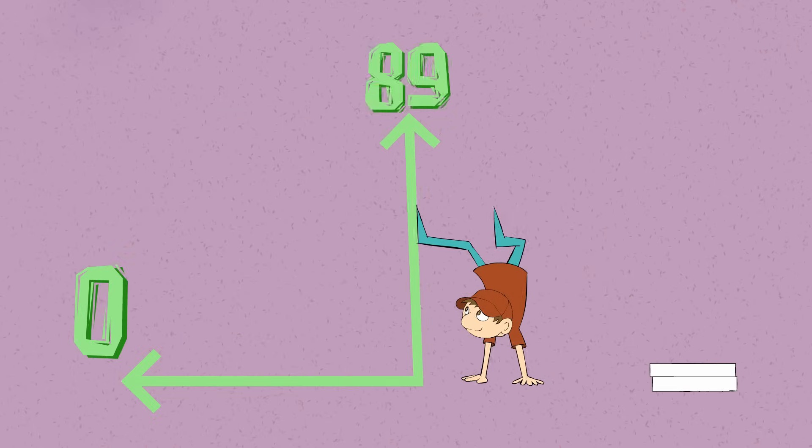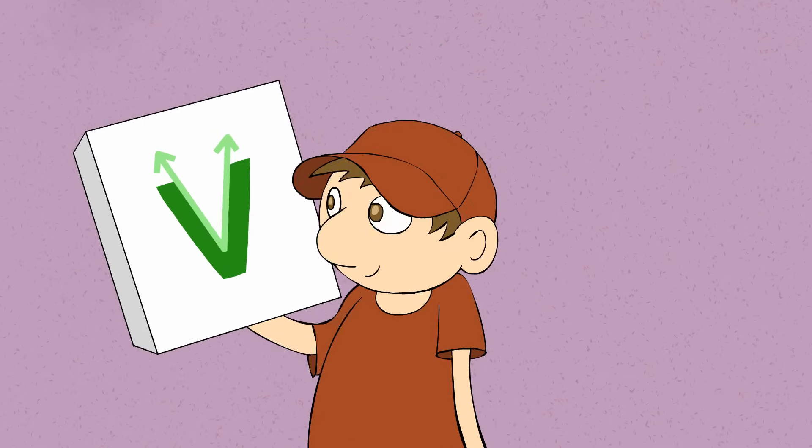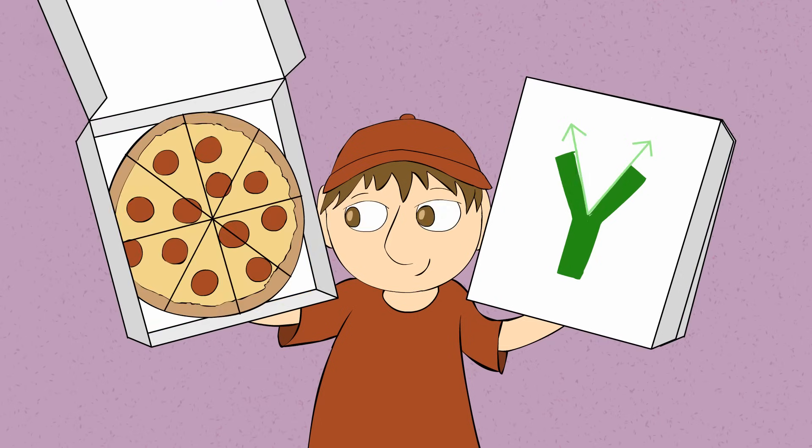Between 0 and 90, an angle is acute. This angle's small and skinny, and kinda cute. It looks like a V, or the top of a Y, or the angles that you see eating pizza or pie.